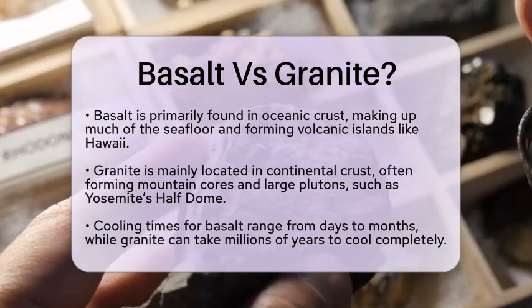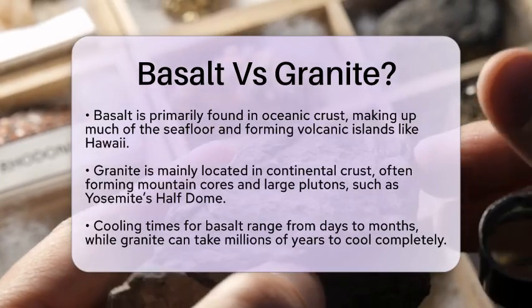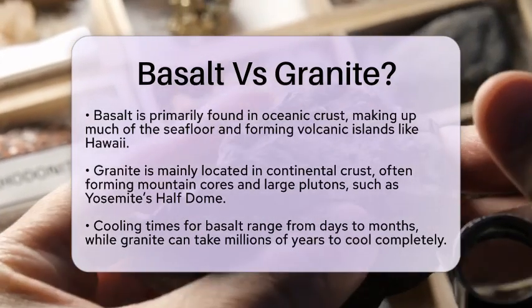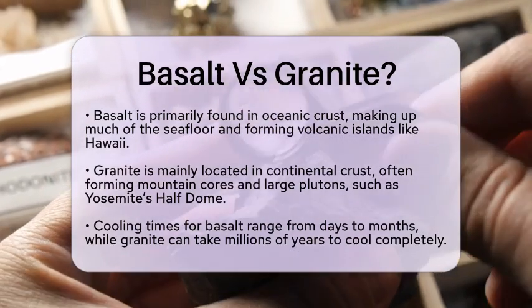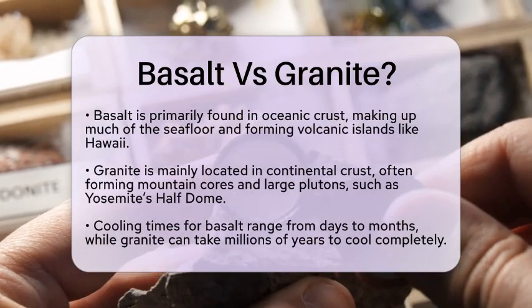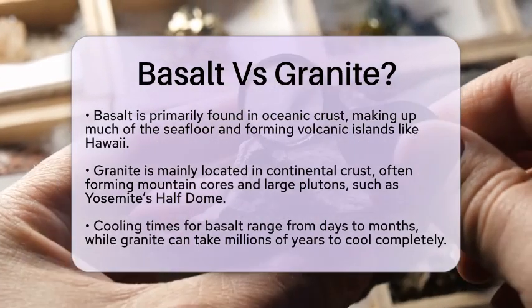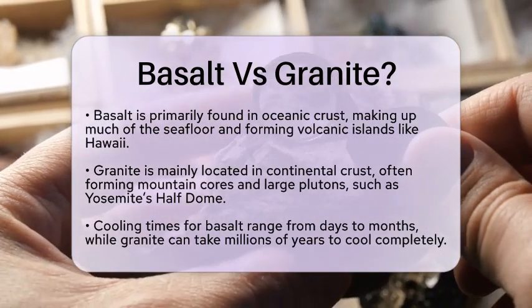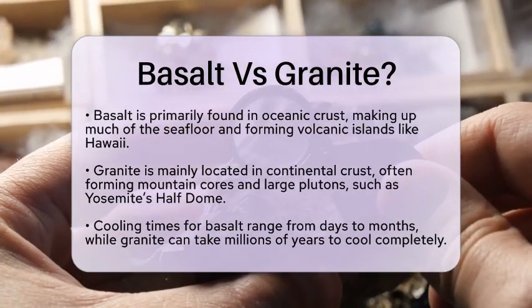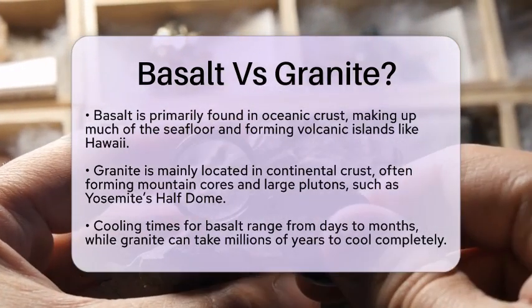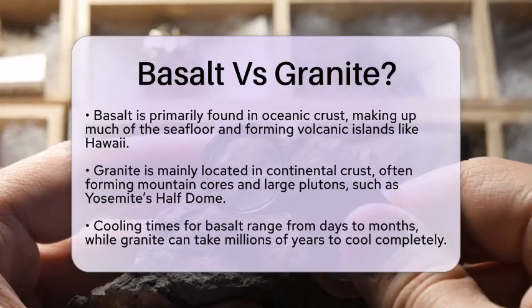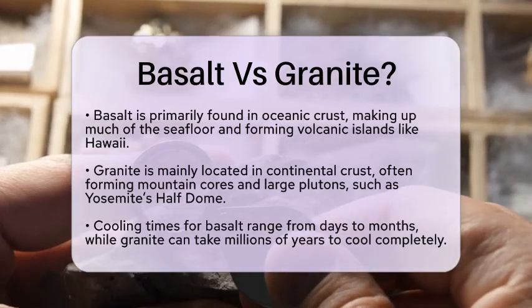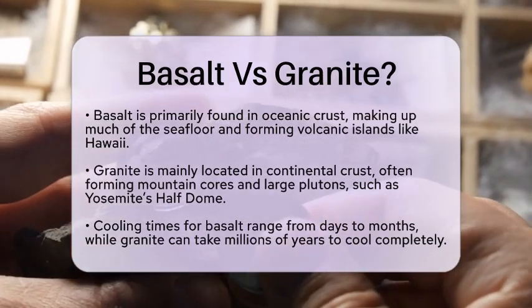The cooling timescales for these rocks are quite different as well. Basalt can solidify in a matter of days to months, while granite may take millions of years to cool completely. This difference explains why basalt has smaller crystals compared to the larger ones found in granite.